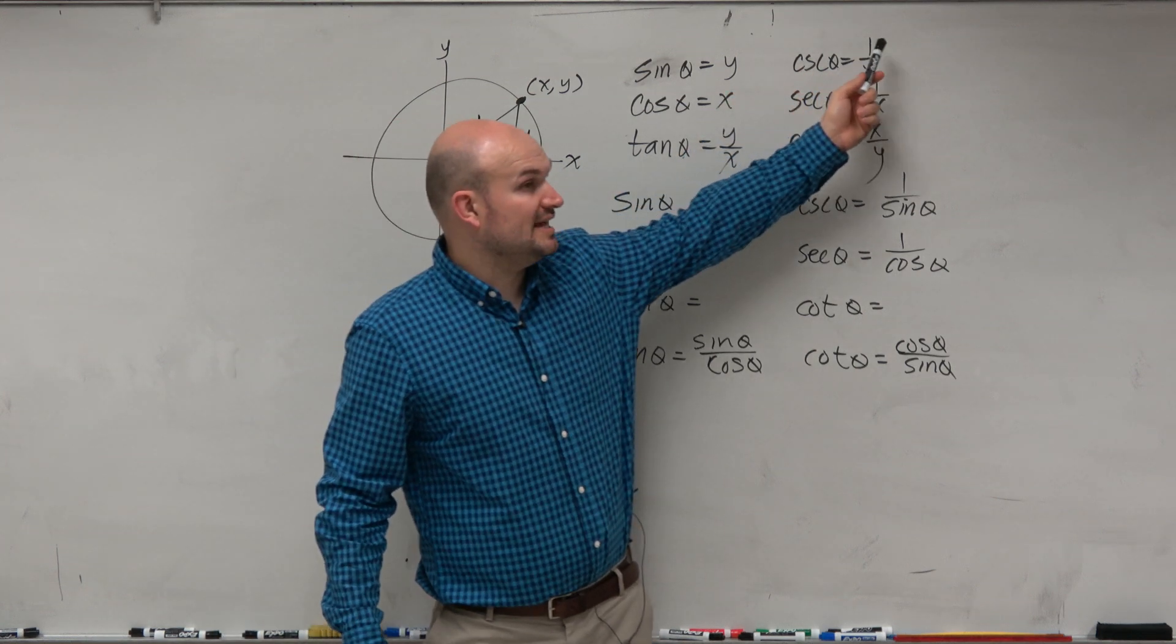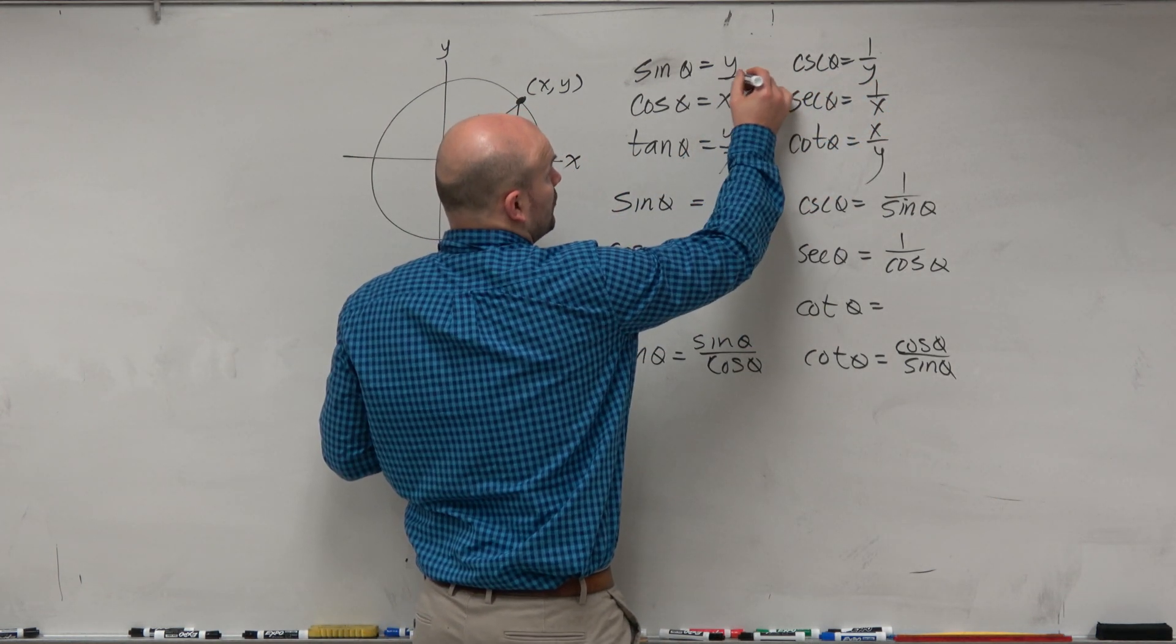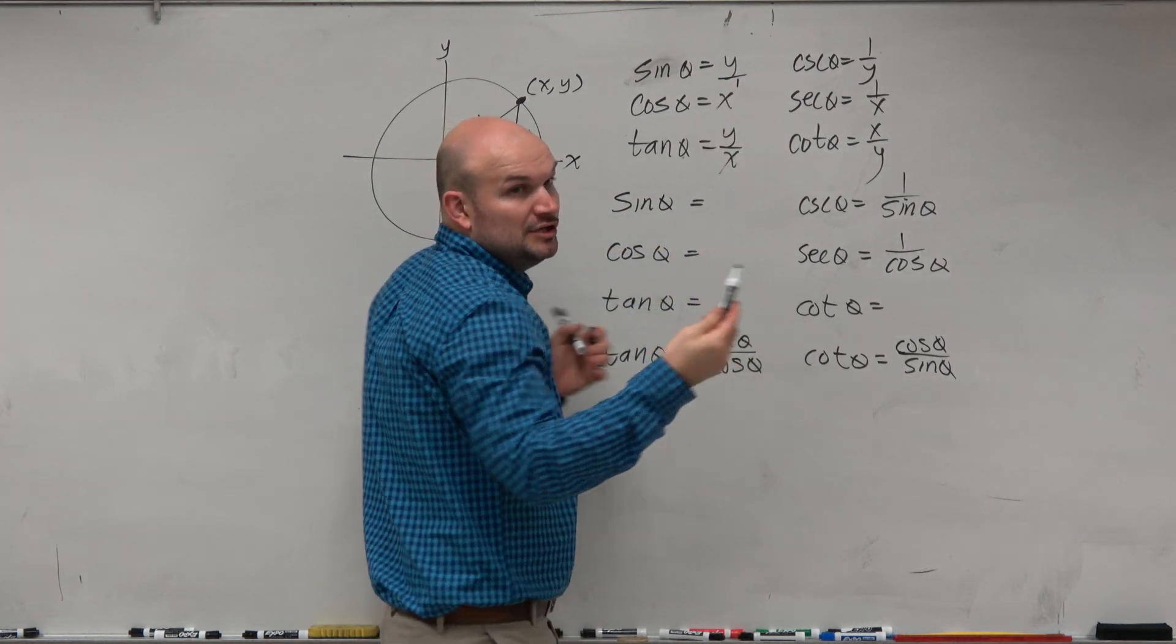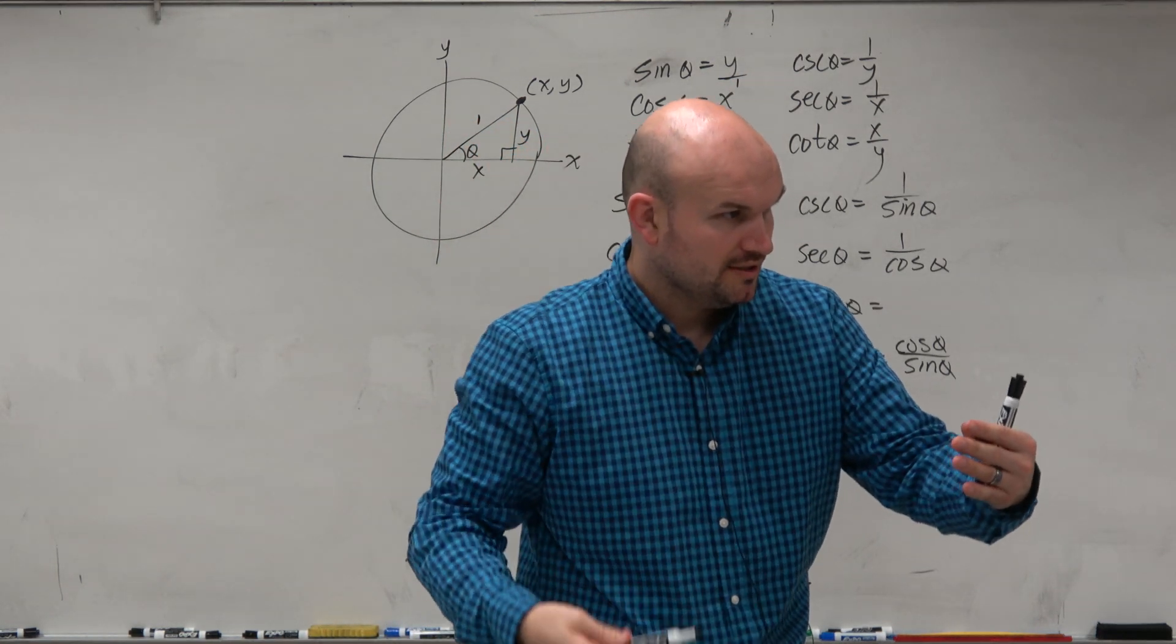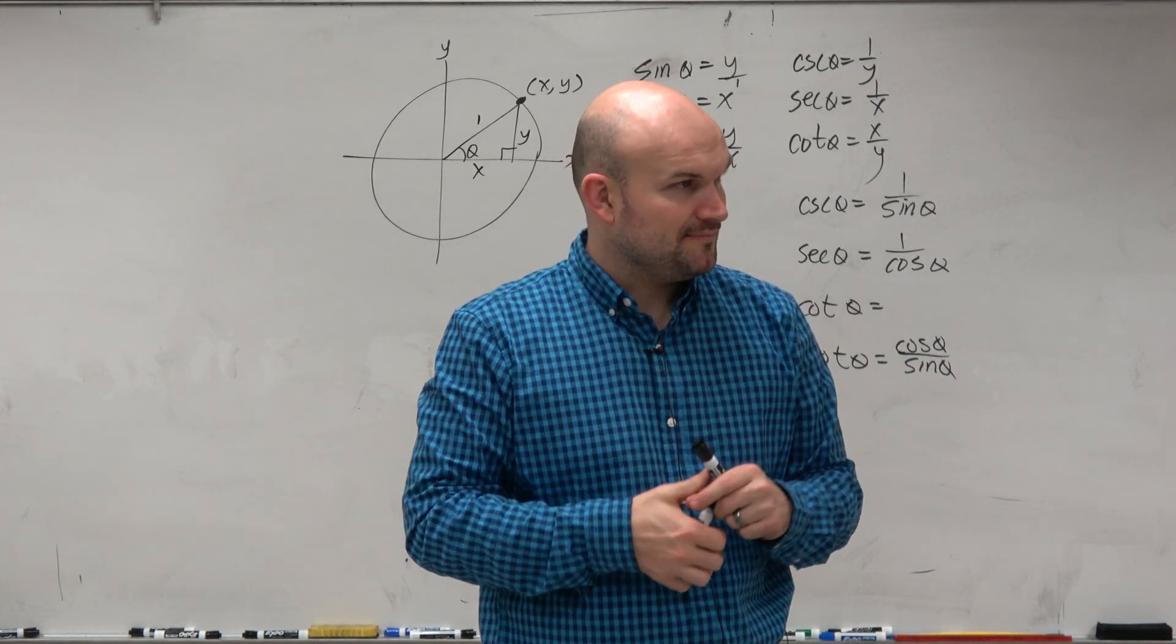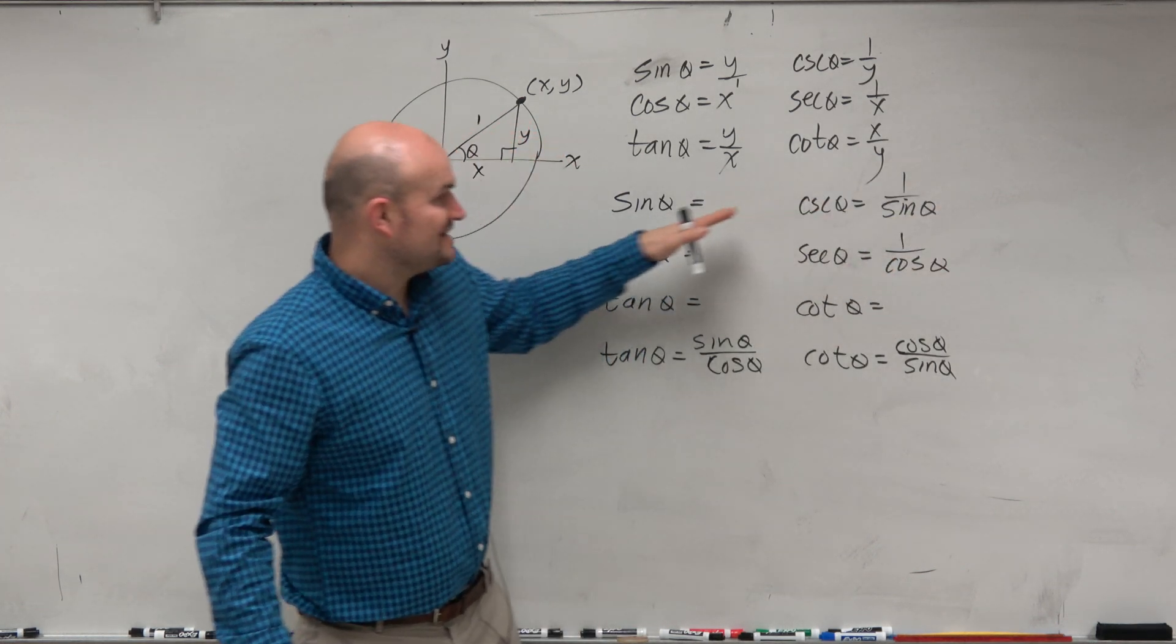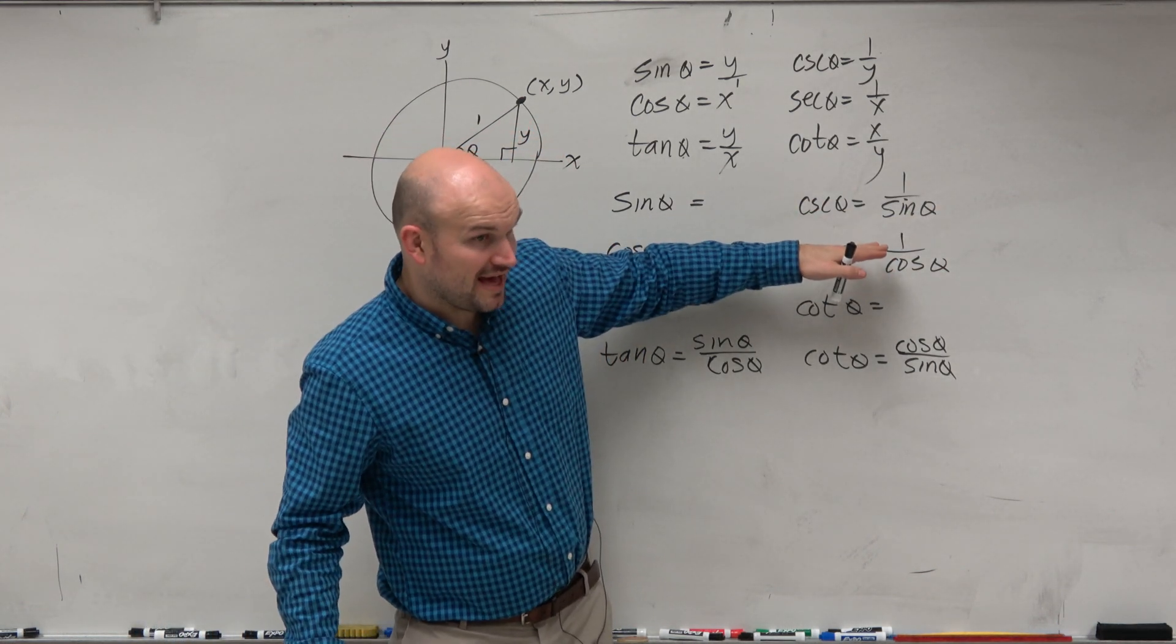Sine is y, cosecant is 1 over y. And again, you can think about this as like y over 1, right? Because remember when you do the reciprocal, you're just flipping them. Like 3 over 4, the reciprocal is 4 over 3. So think about it this way.